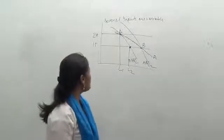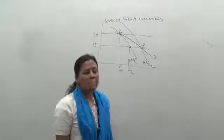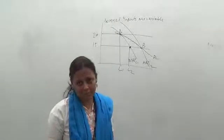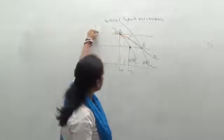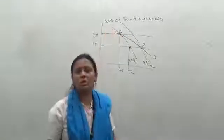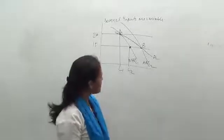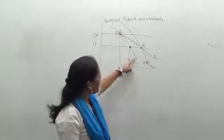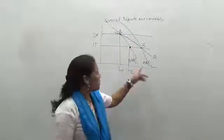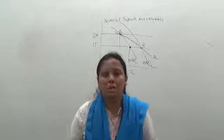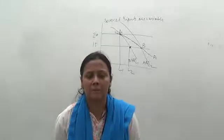To summarize: movement along the MRPL curve only shows the demand curve for a single variable factor, and the intersection of the wage curve on that line tells you the equilibrium in the labor market. But when we consider more than one factor market, the MRPL curve alone is not the demand curve. Instead, joining the intersection points together gives us the demand curve DL — the new demand curve considering many variable factors, more than one variable factor. Thank you.